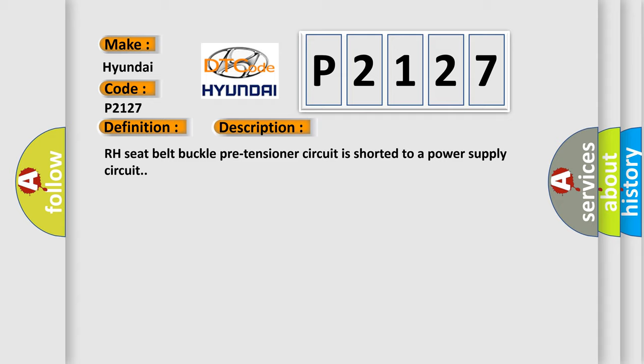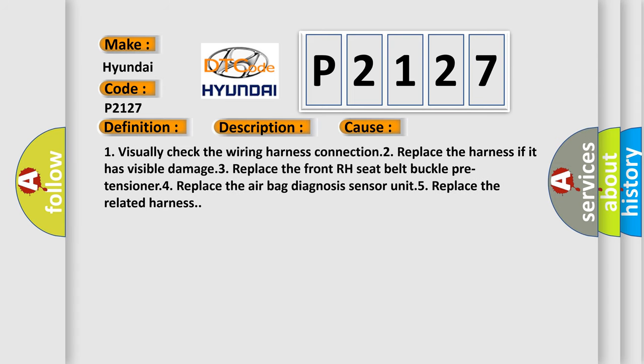This diagnostic error occurs most often in these cases. 1. Visually check the wiring harness connection. 2. Replace the harness if it has visible damage. 3. Replace the front RH seat belt buckle pre-tensioner. 4. Replace the airbag diagnosis sensor unit. 5. Replace the related harness.